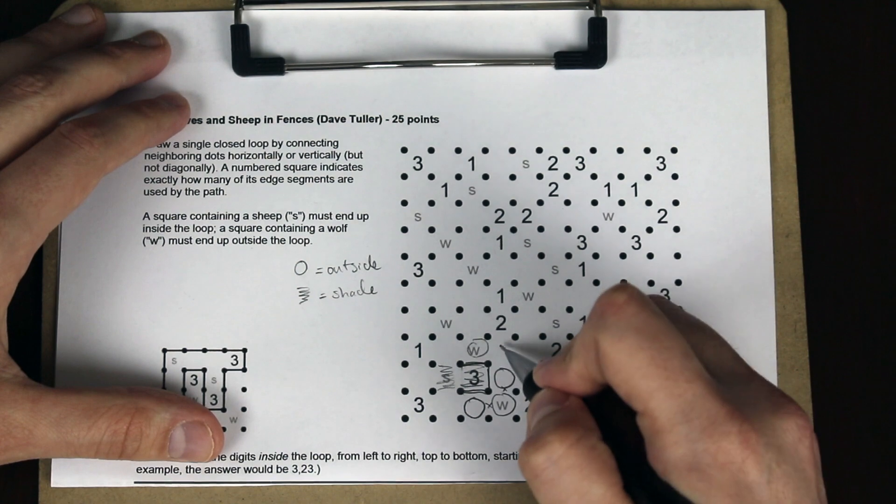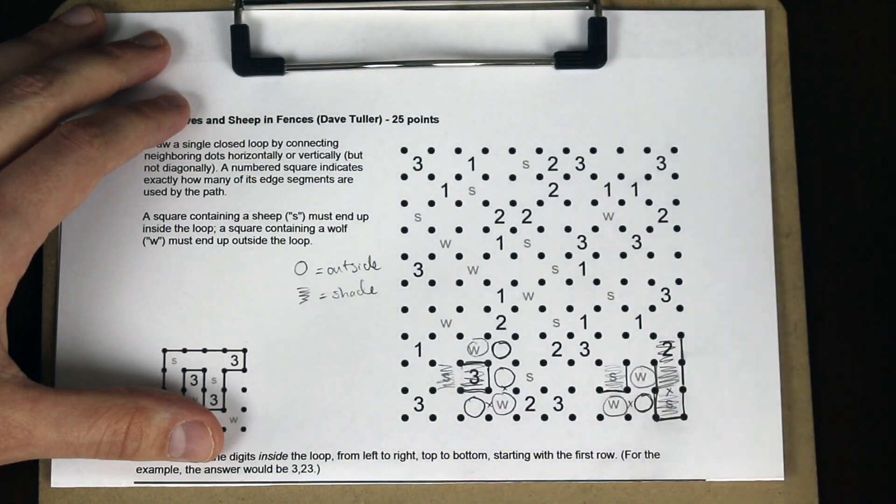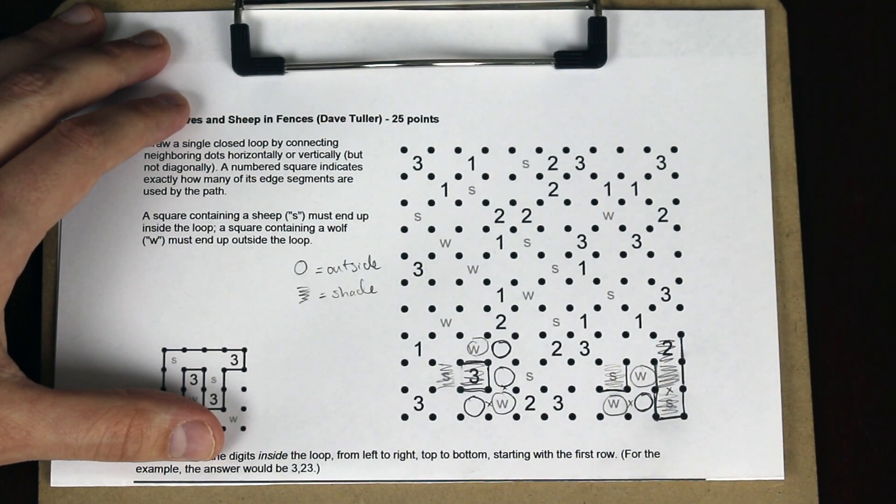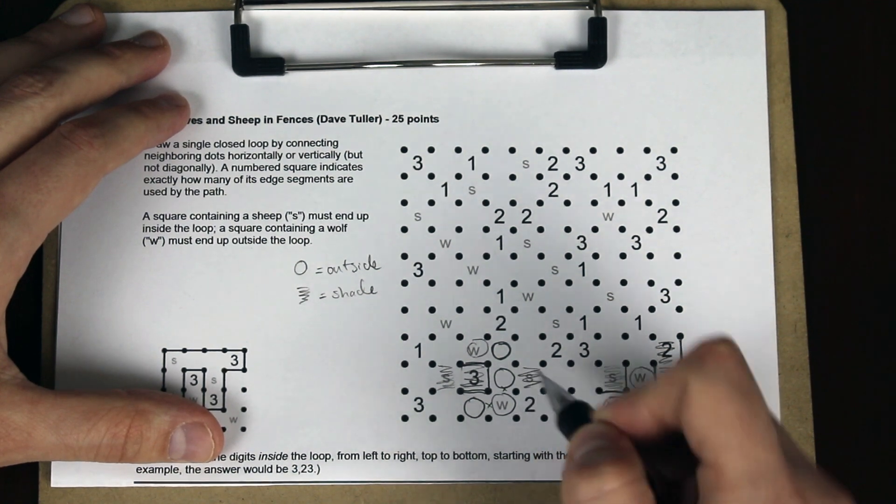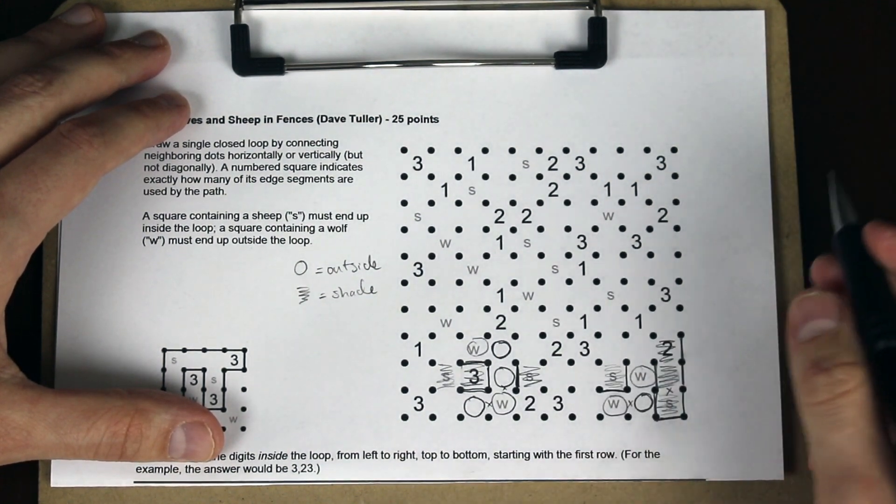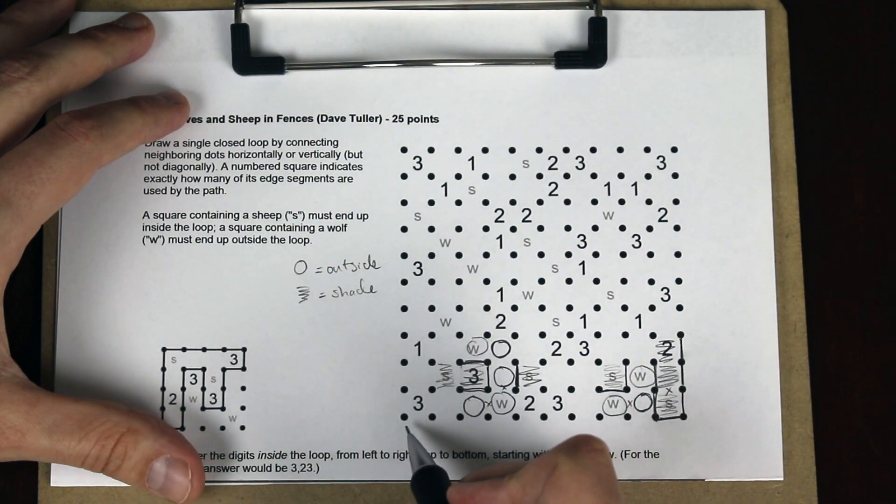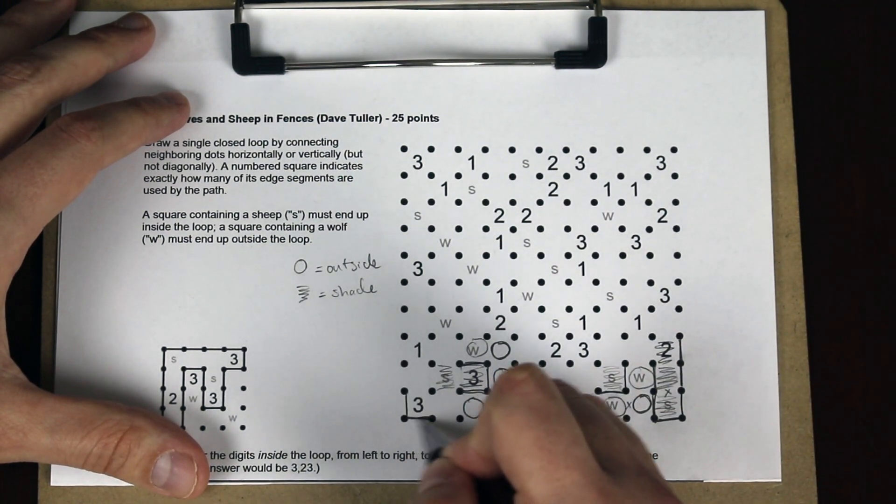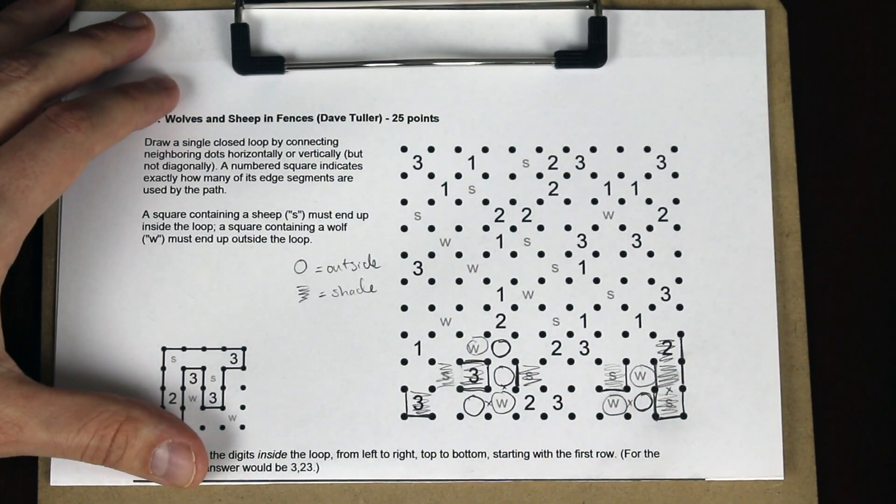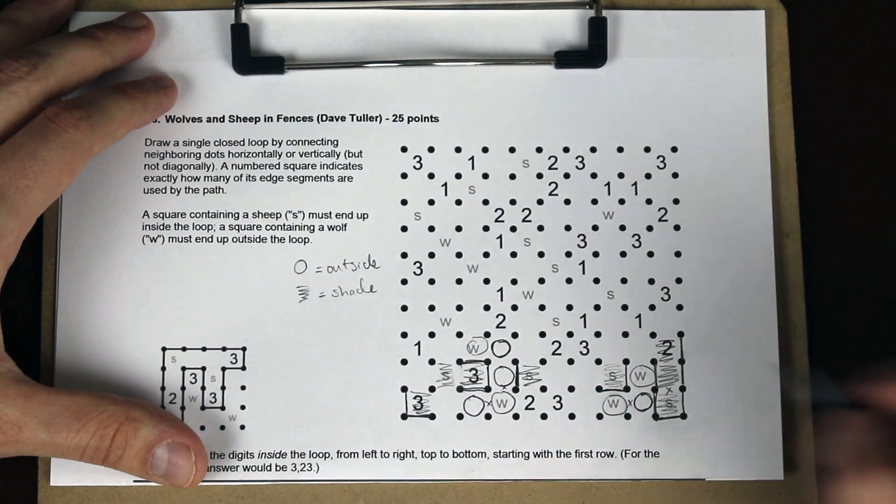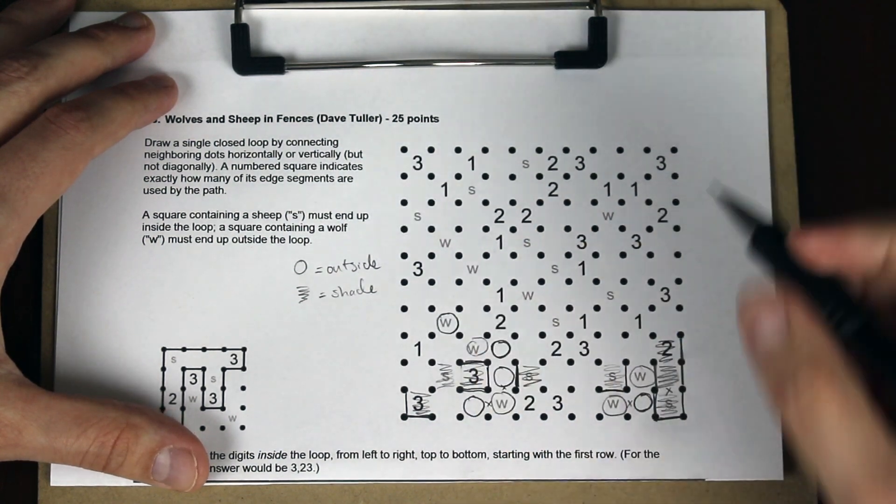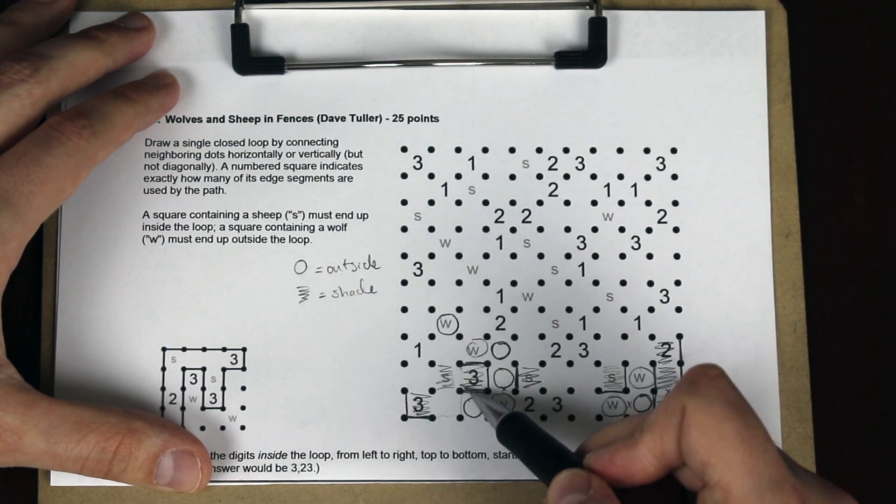There's a checkerboard pattern here, so that must be outside the loop. This is inside, so there has to be a line there. From this Slytherlink video, one of the patterns that we saw is that threes in the corner have to have their lines like this. That means it's inside the loop. This is outside the loop here, and now let's take a look at this region.